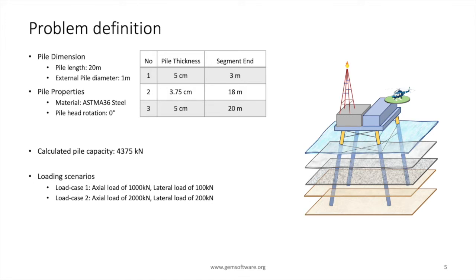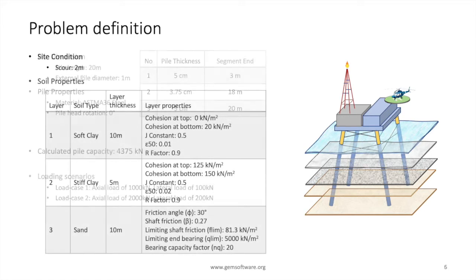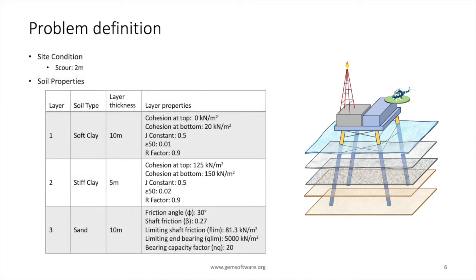We will try two loading scenarios. Load case 1: axial load of 1000 kN and a lateral load of 100 kN. Load case 2: axial load of 2000 kN and a lateral load of 200 kN. The soil consists of three layers: soft clay 10 meters thick, stiff clay 5 meters thick, and a sand layer 10 meters thick.